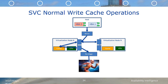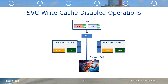The write is then scheduled for destage to the back-end storage, or in the case of data that needs to be replicated, will be scheduled for replication as well. When the write cache is disabled for a volume on SVC, the write will not be placed in the SVC cache, nor will it be mirrored to the partner node. It will just pass through the SVC and go directly to the back-end storage controller. In reality, there is coordination between the SVC host and the back-end that I did not include in the diagram in order to keep it manageable.